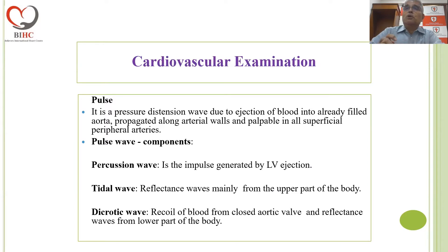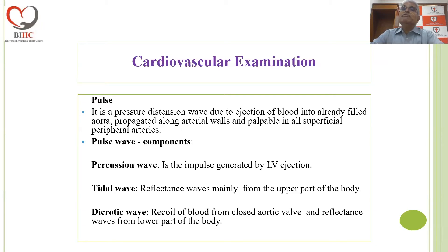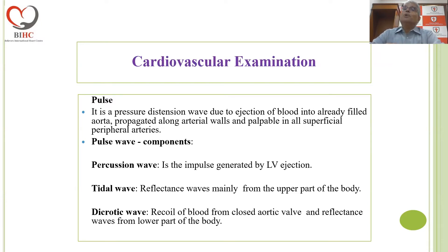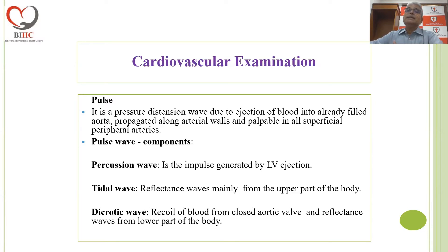The pulse wave has three components. It is a pressure distension wave generated because the LV is pumping into an already filled aorta, propagated along the arterial walls. The pulse wave has two systolic components — the percussion wave and the tidal wave — and a diastolic component, the dicrotic wave. The percussion wave is the impulse generated by LV ejection. The tidal waves are reflected waves from the upper part of the body. The dicrotic wave occurs by the recoil of blood from the closed dicrotic valve and reflectance waves from the lower part of the body superimposed on that.